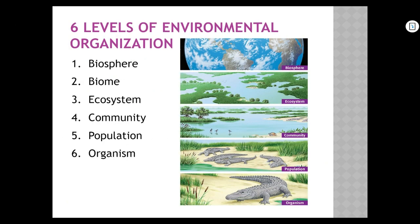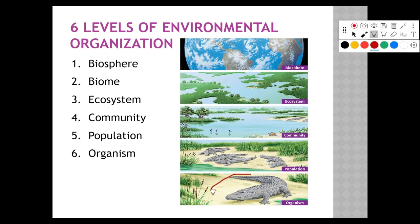Let's talk about the six levels of environmental organization. This is how the biosphere — all living things on the planet — are organized. At the smallest level, you have an organism, which is just one individual living thing. This crocodile right here is an organism. You are an organism. A single bacterium, a flower, a plant — anything that is alive and is by itself is an organism.